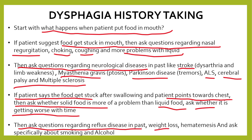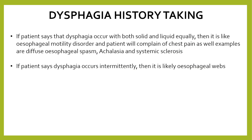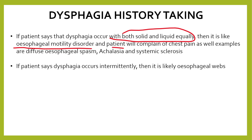Then ask the patient about reflux disease in the past, weight loss, hematemesis, and ask specifically about smoking and alcohol, because they are associated with upper GI malignancy. If the patient says that dysphagia occurs with both solid and liquid equally, then it is likely an esophageal motility disorder.